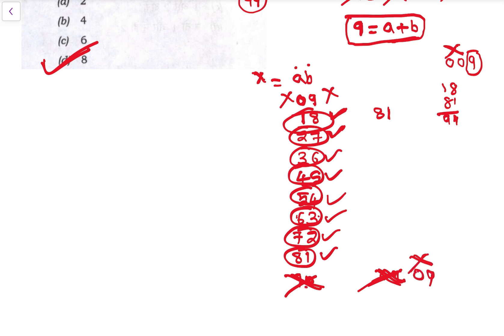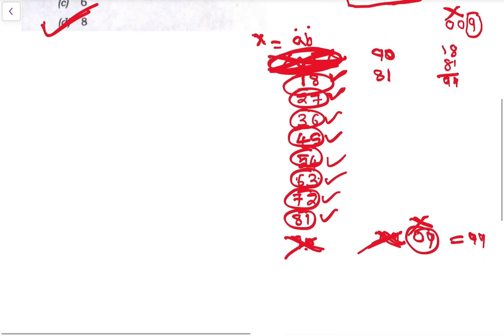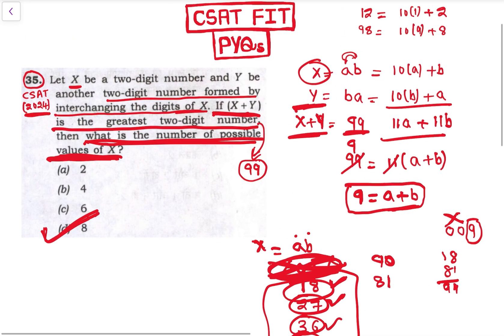90's reverse is 09, so the reverse is not a two-digit number. Similarly, either this is also not a two-digit number. So X's possible values - these eight possible values are there, so 8 is the answer.